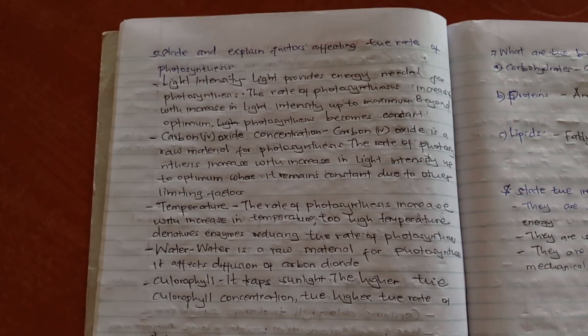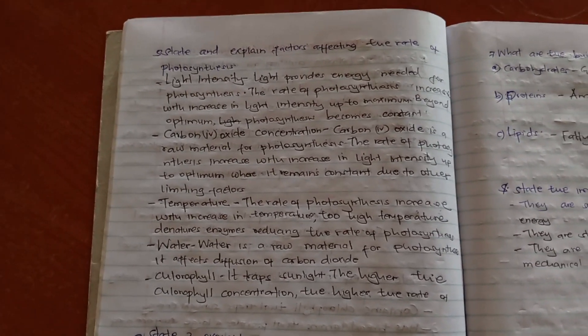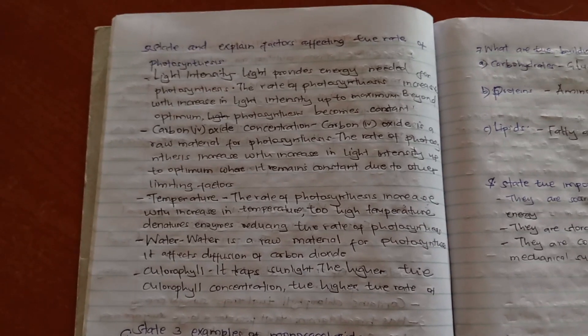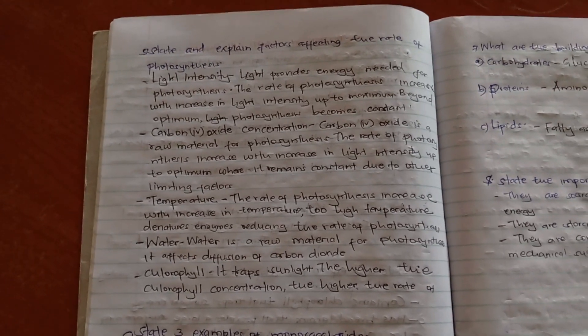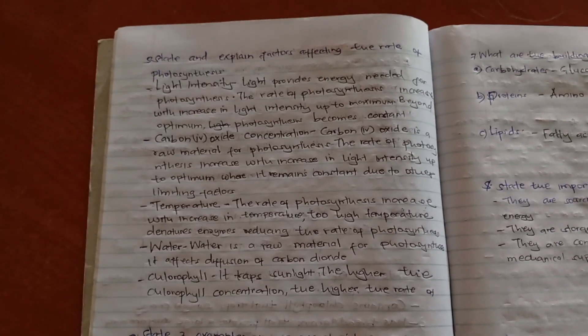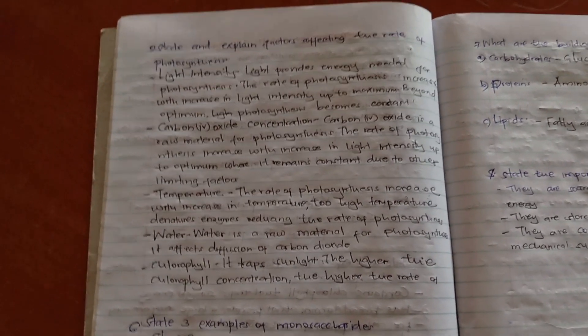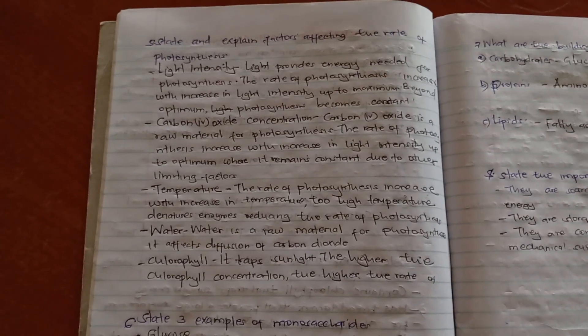Where even if you increase light, other factors become limiting factors. Carbon dioxide concentration. Carbon dioxide is a raw material for photosynthesis, and the more carbon dioxide concentration is there, then the higher the rate of photosynthesis up to optimum.